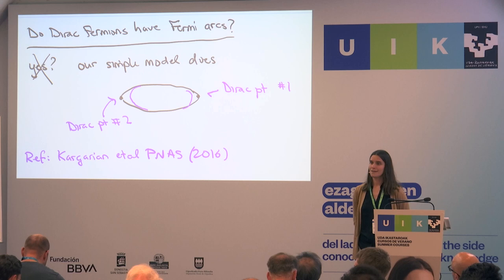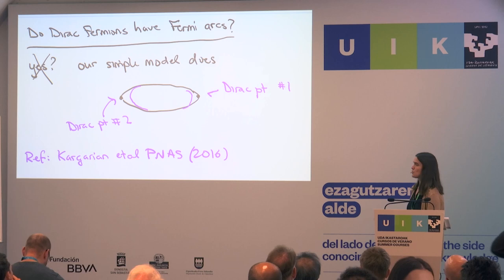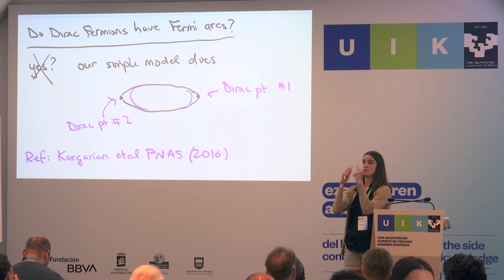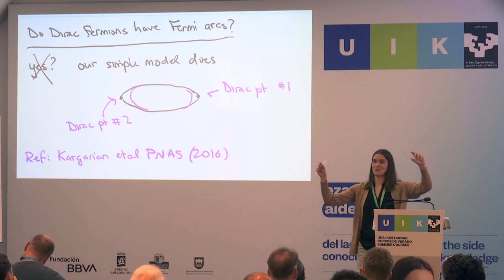We can't have just one Dirac point. One way to see that: you have bands with different symmetry eigenvalues that are crossing, but the Brillouin zone is periodic. So eventually those symmetry eigenvalues will meet each other, and there needs to be another Dirac point to compensate.